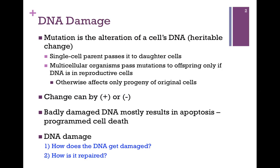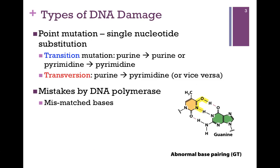We want to look first at how DNA gets damaged — that's what we'll cover in this lesson — and in the next lesson, we'll see how it gets repaired. Point mutations are single nucleotide substitutions where there's only a single nucleotide change. If that change involves a replacement of one purine for another, or one pyrimidine for another, that's called a transition mutation. If it's a more profound change — a purine replaced with a pyrimidine or vice versa — that's a transversion.